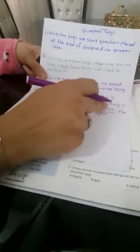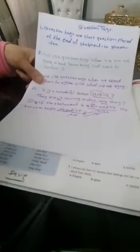The question tag must be negative - they are opposites of each other. And vice versa: if the statement is negative, the tag must be affirmative; if the statement is affirmative, the tag must be negative. The relationship is inverse. Also, the question tag must match the tense of the statement.